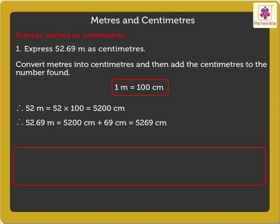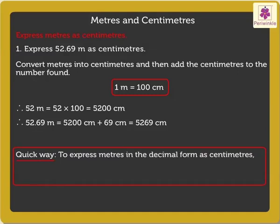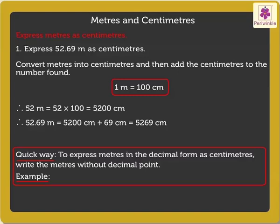Alternately, a quicker way to express meters in decimal form as centimeters is to write the meters without the decimal point. For example, we write 16.84 meters as 1684 centimeters.